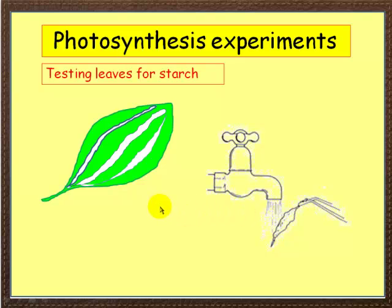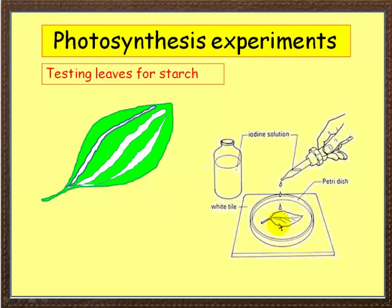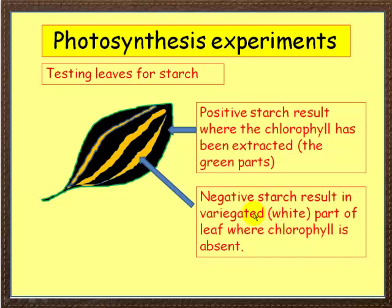We then wash the leaf, lay it onto a petri dish over a white tile, and add some iodine solution. Iodine, if starch is present, will turn blue or black. So where do you think the starch will be found? Well, we find a positive starch result where the chlorophyll was. Where there was chlorophyll — the green parts — the leaf turns blue or black. Where there's no chlorophyll there'll be no starch, so those parts don't react to the iodine — the iodine stays yellow or brown. So a negative starch result is found in the variegated white parts of the leaf where chlorophyll is absent.